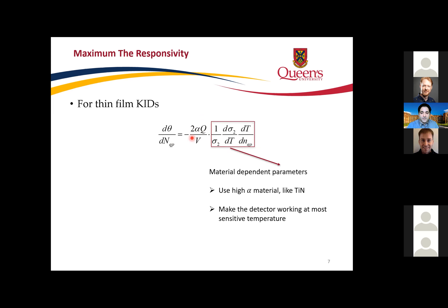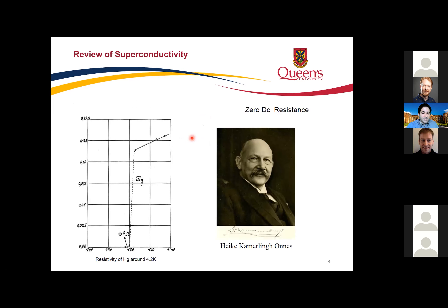Before going further into MKIDs details: MKIDs are superconductors, and superconductivity has important features. Below a critical temperature, resistivity becomes zero. Not all metals are superconductors — we categorize them into type I, type II, and PEC (normal metal like copper). Aluminum is a superconductor. Kamerlingh Onnes, working with liquid helium, first noticed that some materials change their properties at low temperature, and discovered the basic properties of superconductivity, receiving the Nobel Prize for this.